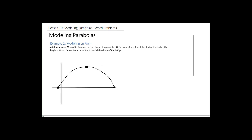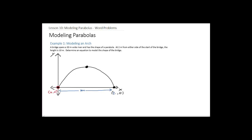Since we're doing a bridge, I'll draw the y-axis here. I'll label y for height and x for the horizontal distance. This point right here is (0, 0). My other x-intercept I don't know yet, but it's going to be (something, 0). The problem says the bridge spans a 30-meter wide river, so that other corner is (30, 0).